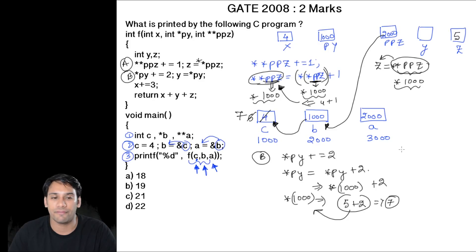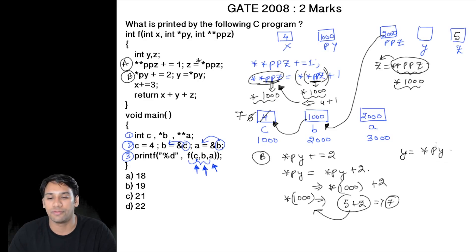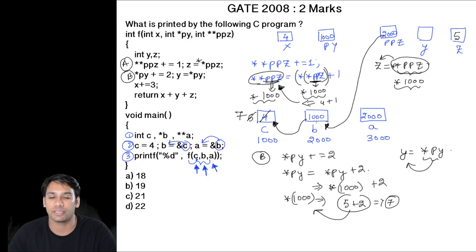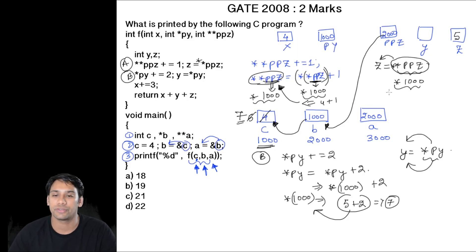The next statement is y = *py. That means we will go to the location pointed to by py, take the value, and store it into variable y. The location pointed by py is 1000. We go to location 1000 and take the value 7, and we store this value 7 into y.